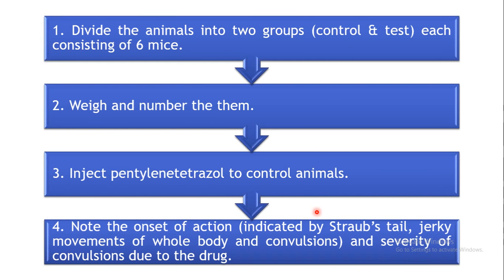Coming to the procedure, the first step is to divide the animals into two groups. One group will serve as the control and the second group as the test group, and each group should contain six mice. Weigh and number these animals to confirm they fall within the stipulated weight range, numbering them from one to six in each group. Then inject the pentylenetetrazole to the control animals.